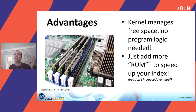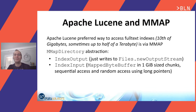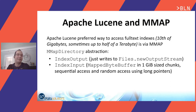Something like stored fields, which you only read seldomly for displaying search results, will be paged in by page. If you want to improve performance, the only thing you need to do in Lucene is add more physical RAM to have more of the data in cache. How that works in Lucene is through a directory abstraction - there's the MMapDirectory, backed by mapped byte buffers. We are mapping the whole file in chunks of one gigabyte.